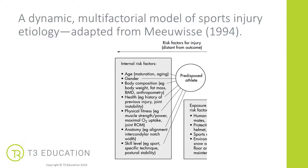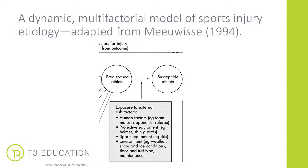The first part of the model covers internal risk factors — what the client or athlete is predisposed to, such as age, gender, physical fitness, anatomy, and skill level. The next part of the continuum is where the client becomes more susceptible to injury through exposure to extrinsic or external risk factors, such as teammates, opponents, direct contact, equipment, and environment including weather and flooring.